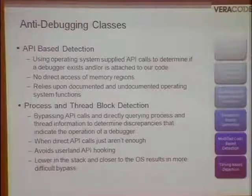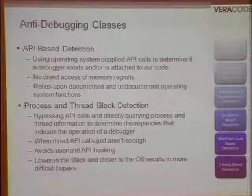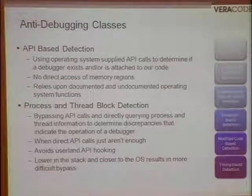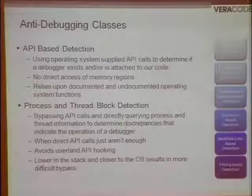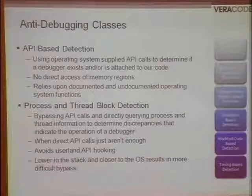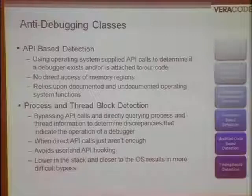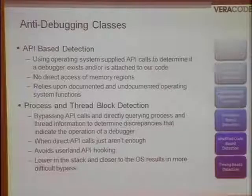Process and thread-based detection is one level deeper — essentially looking at the process and thread blocks and making choices based on information inside these memory blocks to determine if we're running underneath a debugger. APIs can be hooked and modified fairly easily, and this approach gets around those API hook bypass methods. Direct access to the process and thread blocks holds pertinent information: the being-debugged flag, debug port information, static strings, and heap information — all of which are tweaked slightly differently when a process is run underneath a debugger.